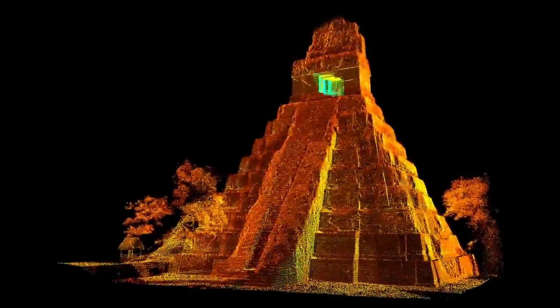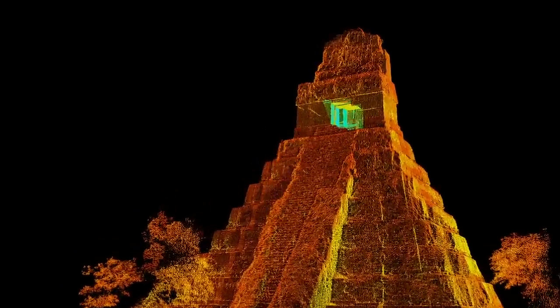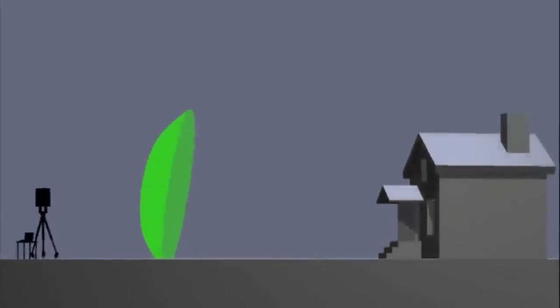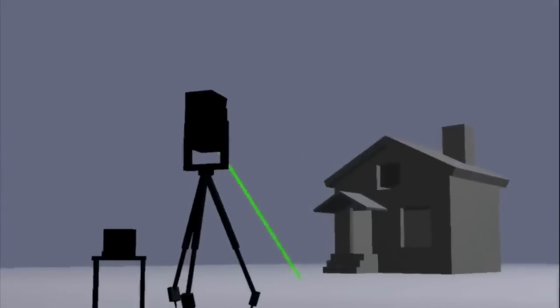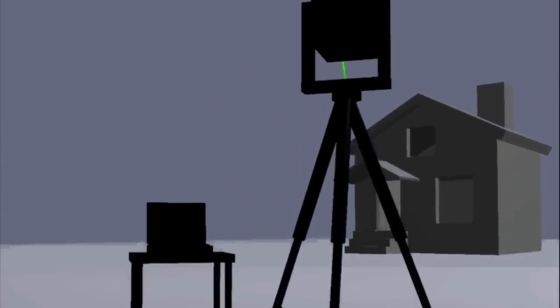Today we can document a site in 3D using a laser scanner, which sends out a pulsed laser beam that hits the surface of a structure and records the precise coordinates of that point. The laser scanner does this so quickly that it is able to record hundreds of thousands of points a second, capturing a high-resolution reading of all the surfaces around it.